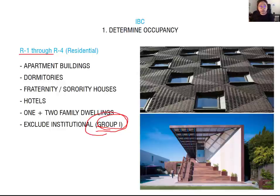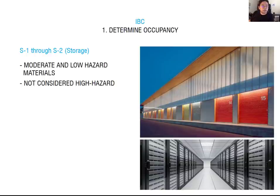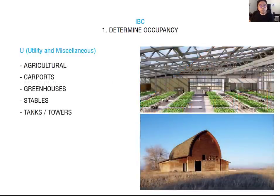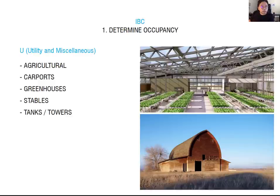S occupancy is storage — places where items are stored unless considered high hazard. If you have a high-hazard storage area, it is considered H occupancy; S covers non-high-hazard materials. U occupancy — utility and miscellaneous — is for structures of an accessory character not classified in any specified occupancy, such as agricultural buildings, carports, greenhouses, stables, tanks, and towers.